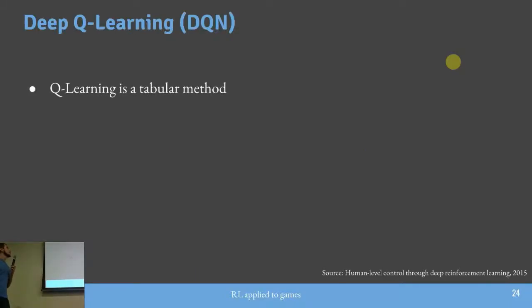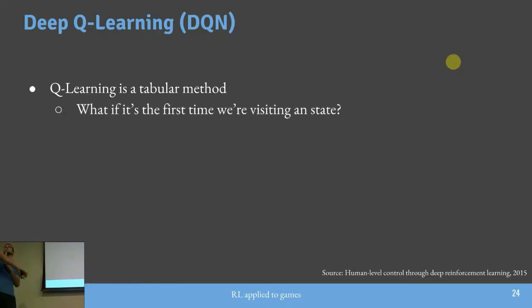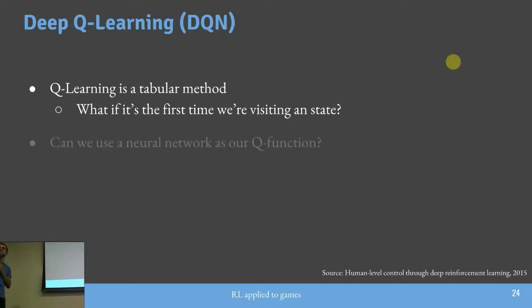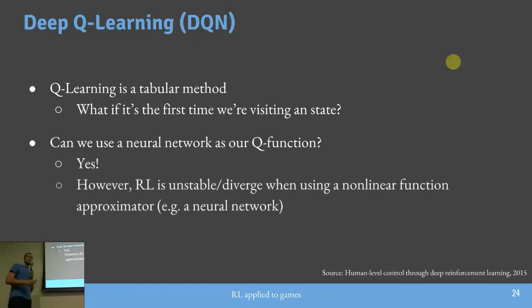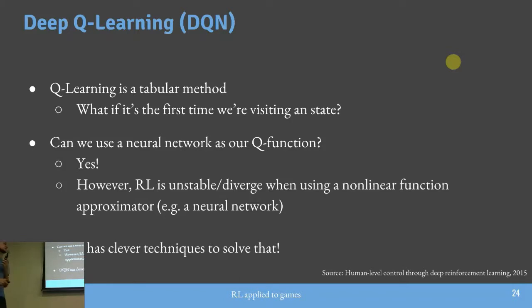O Q-Learning é um tabelão com estados, ações e recompensas. O problema: se eu nunca vi um estado, como agir? Redes neurais são aproximadores universais — funções que, em teoria, podem representar qualquer função. A gente pode usá-las no lugar da tabela. O Deep Q-Learning foi a primeira implementação a resolver isso. Usou-se uma rede neural convolucional: baseado em quatro frames do jogo, passa-se por operações para extrair características, e uma rede neural indica qual ação tomar dentre as possíveis.